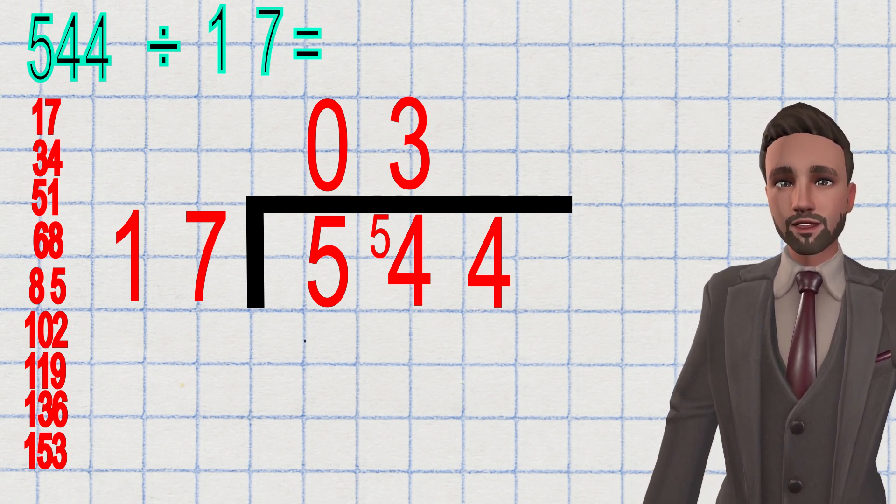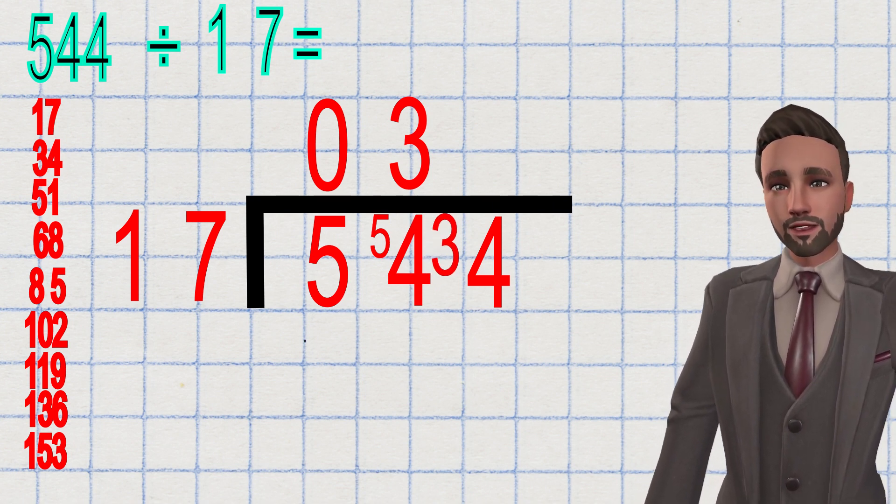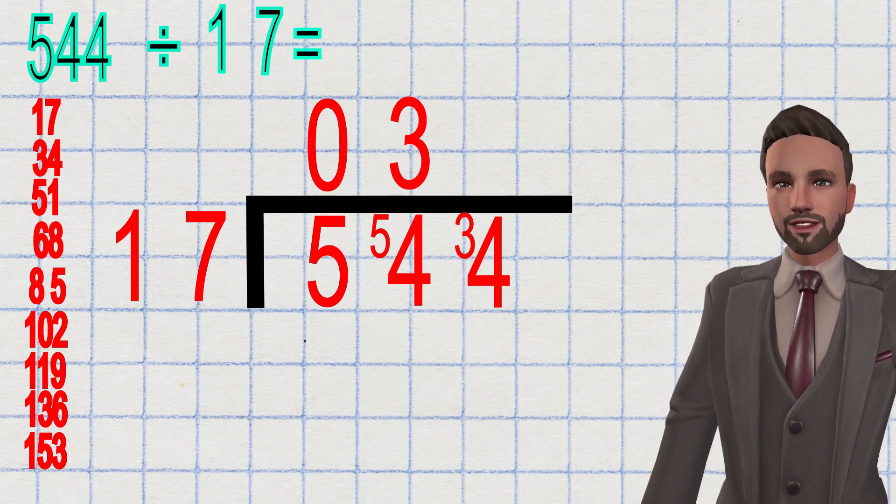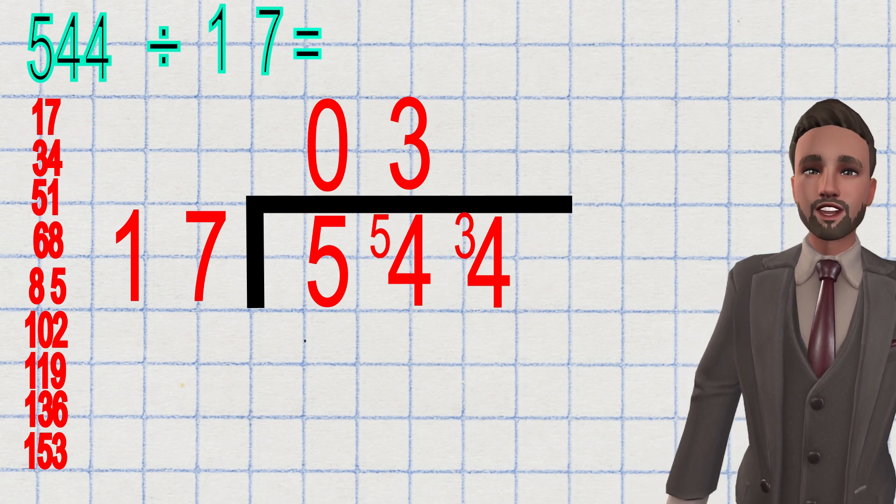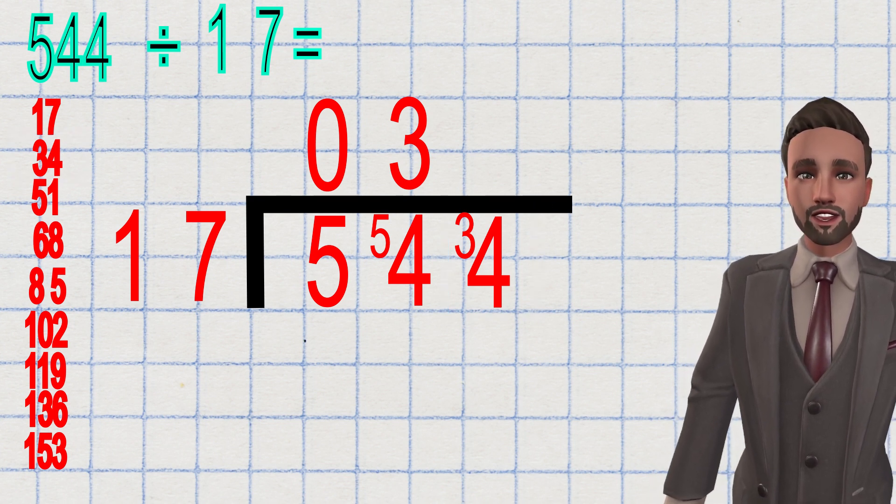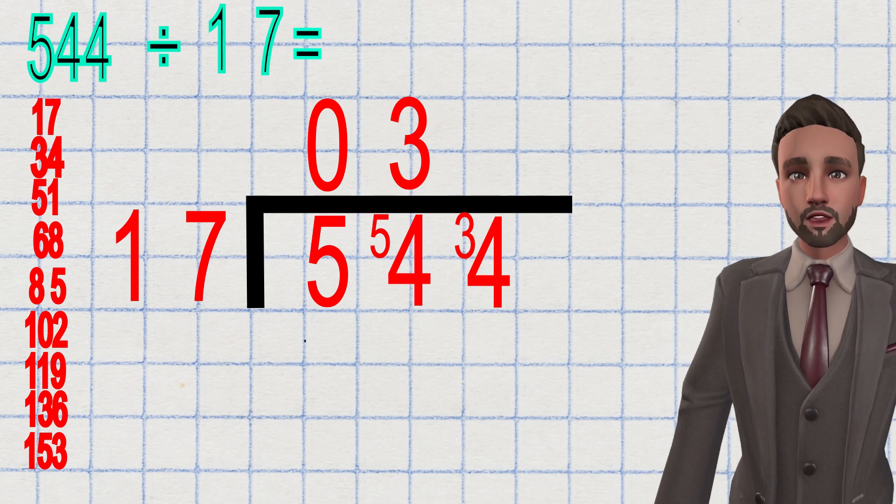So with the 3 that was left over, I carry that over. Now I have 34. I can see that 34 is in my multiples, but I need to know how many times to put it on the top. I can see it's one, two—two times.